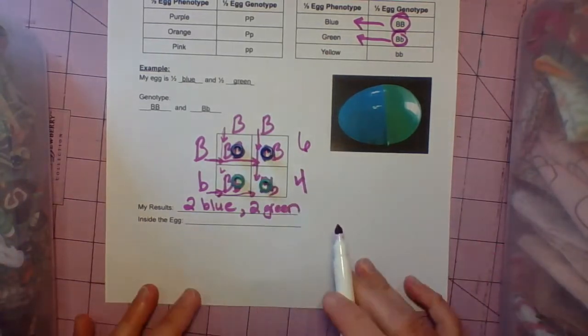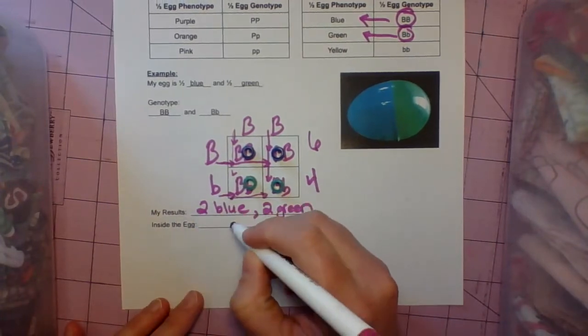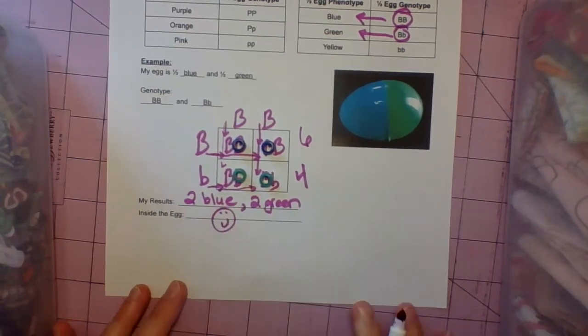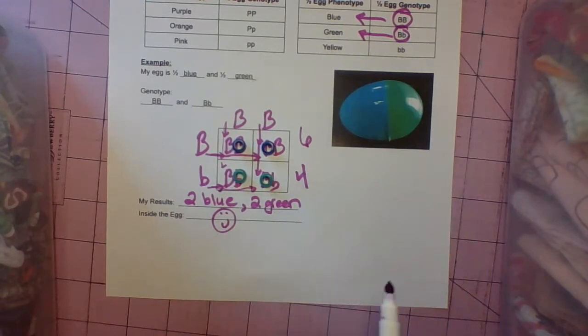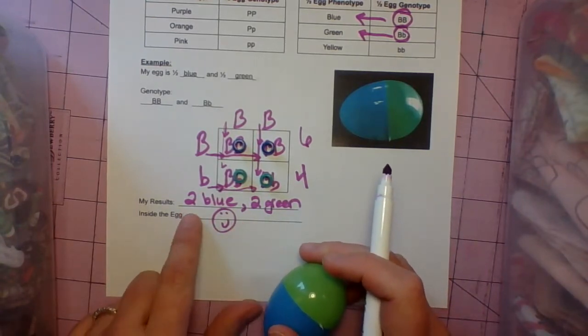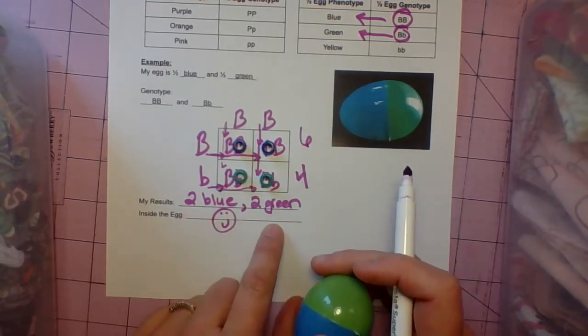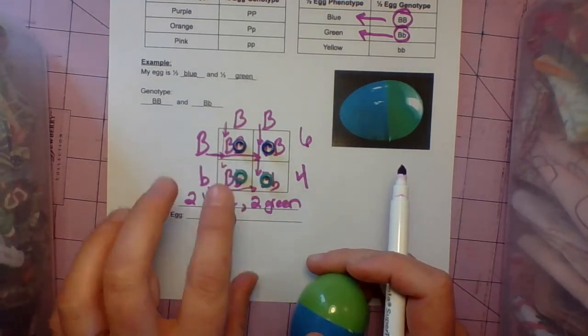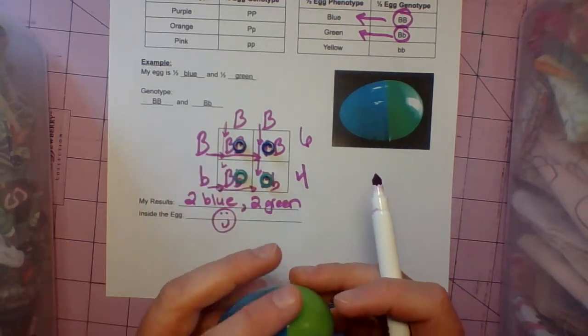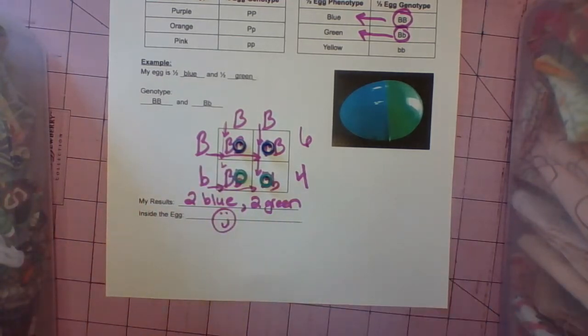If you were correct, you can put a smiley face or say yes, you were correct. If you weren't correct, make sure to write down the correct answers and check back your work and figure out where it went wrong. I hope that was helpful. I hope you all have a very lovely Easter break. I'll see you soon. Goodbye, everybody.